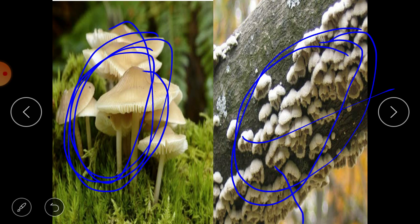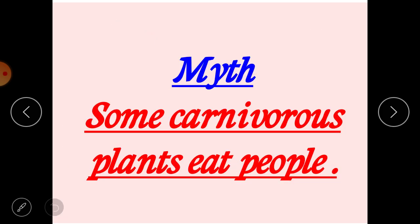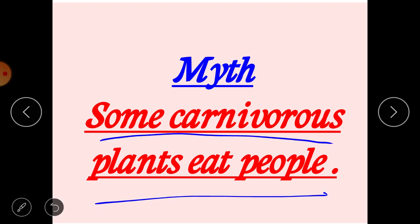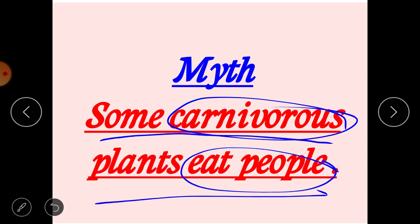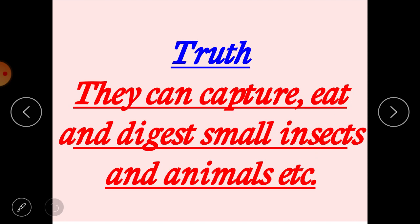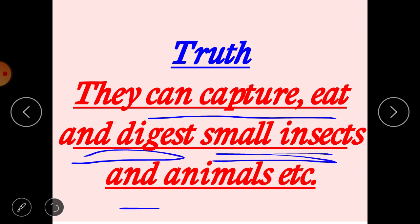There is a myth that some carnivorous plants can eat people. But my dear students, this is not true. The truth is that carnivorous plants can only capture, eat, and digest small insects and small animals. They cannot capture or digest big animals or human beings. It is only a myth — it is not reality.